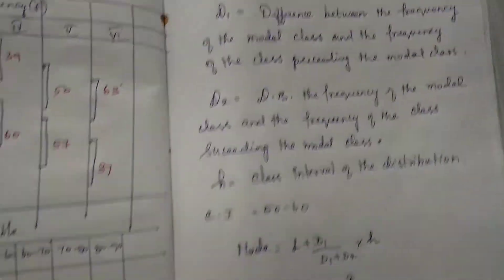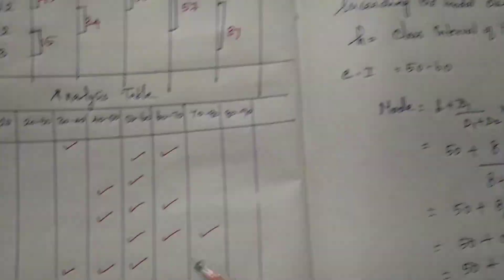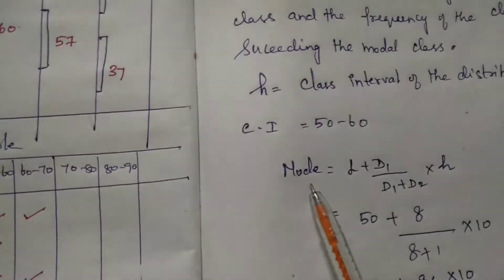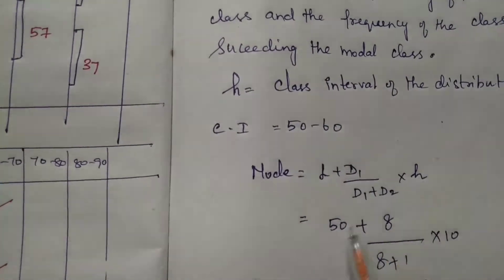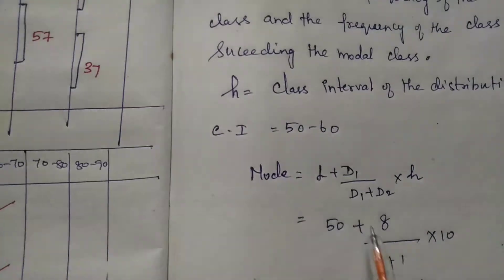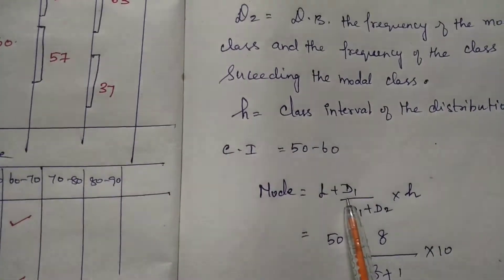The class interval is 50 to 60 because it has the highest frequency. So, 50 to 60. Mode formula: L plus D1 divided by D1 plus D2, multiplied by H. The lower limit is 50. D1 is the preceding value: 23 minus 15.